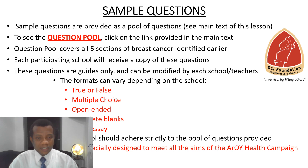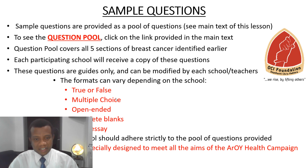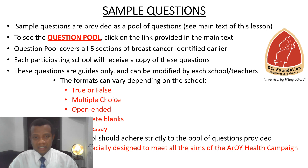We don't want you testing to see who is the most brilliant — that's not our aim. What matters to us is that the students know what we want them to know. If you keep within the pool and ensure that for breast cancer you take questions from the five sections, and for cervical cancer you take questions from the six sections, then you would have done a very good job of setting a balanced question.